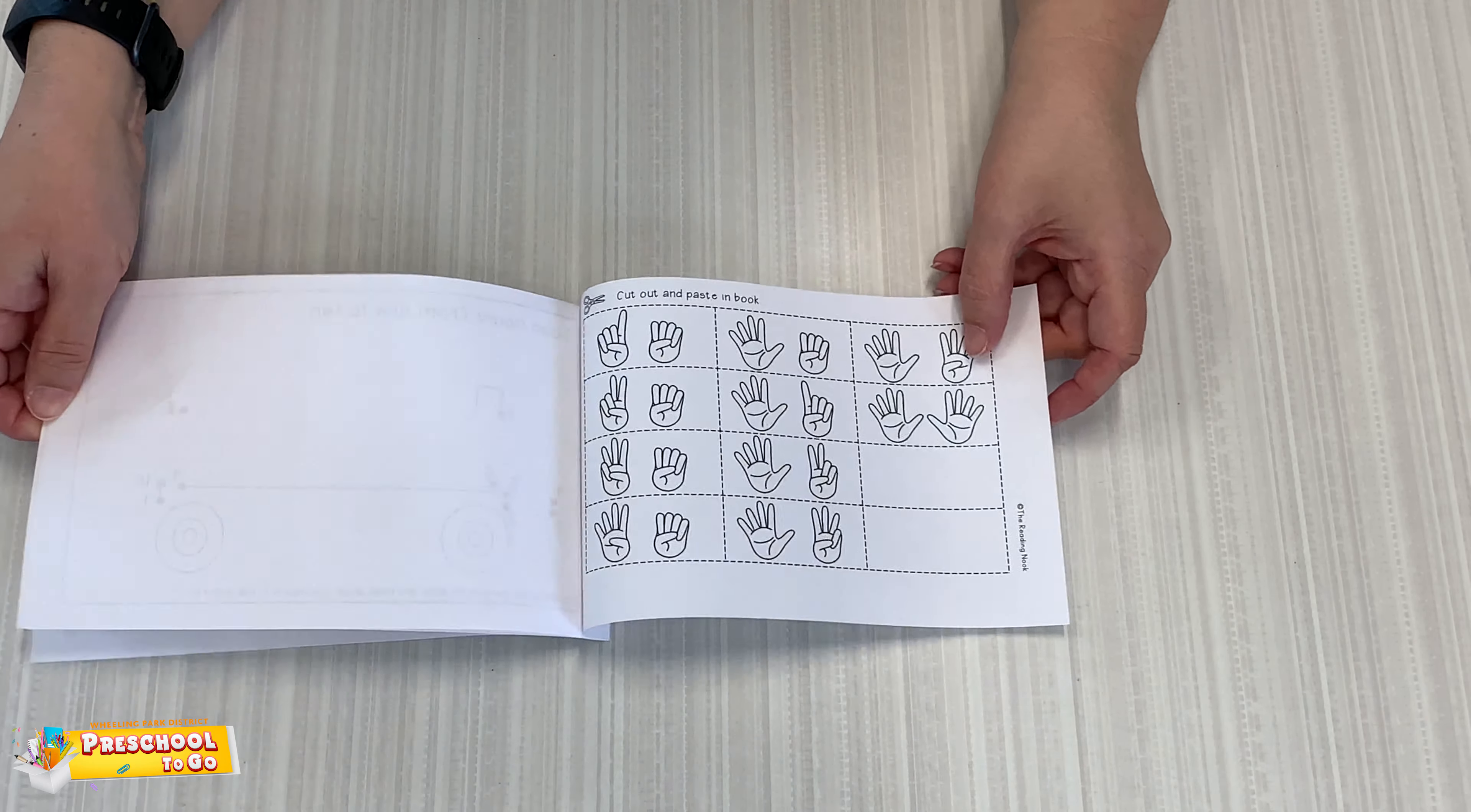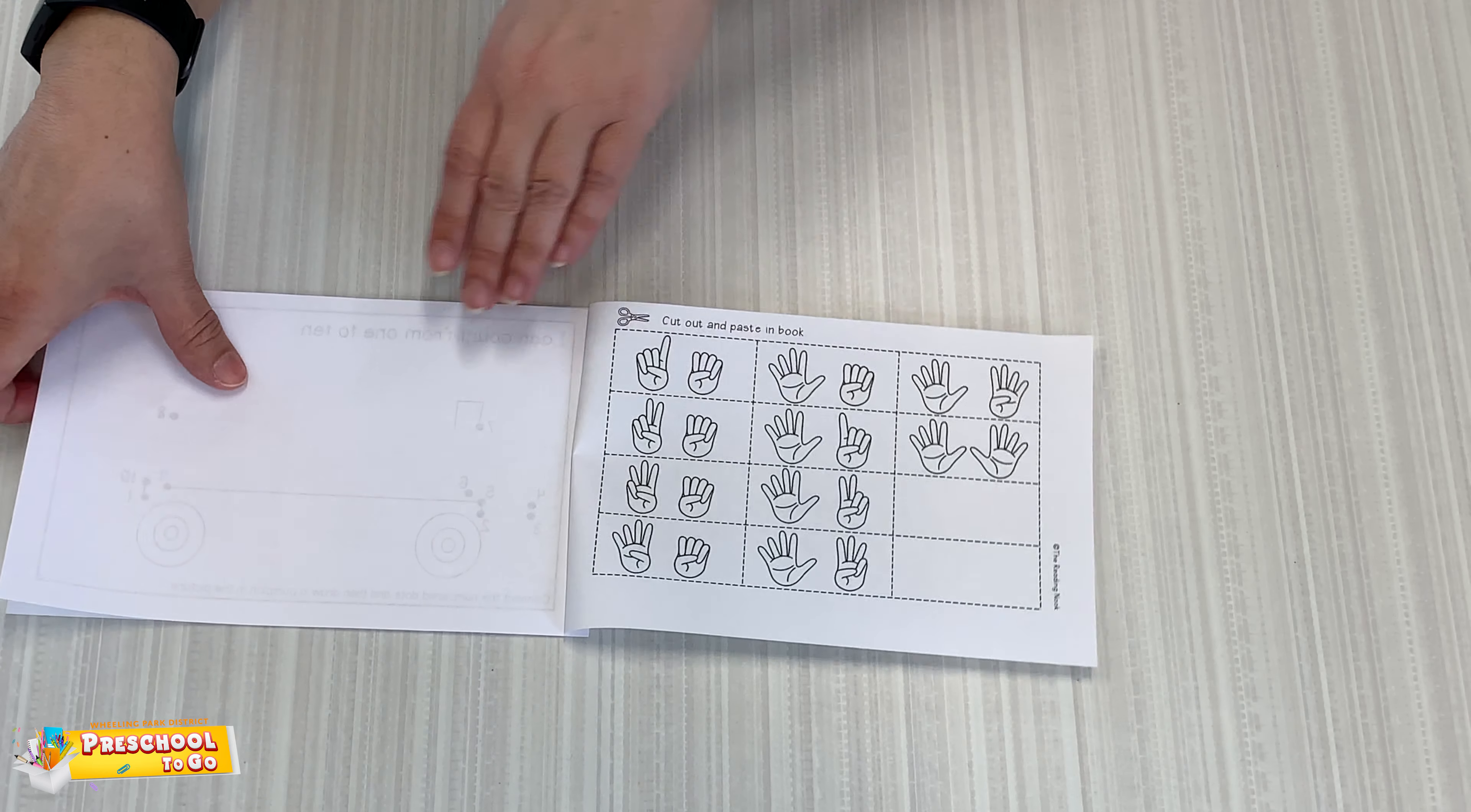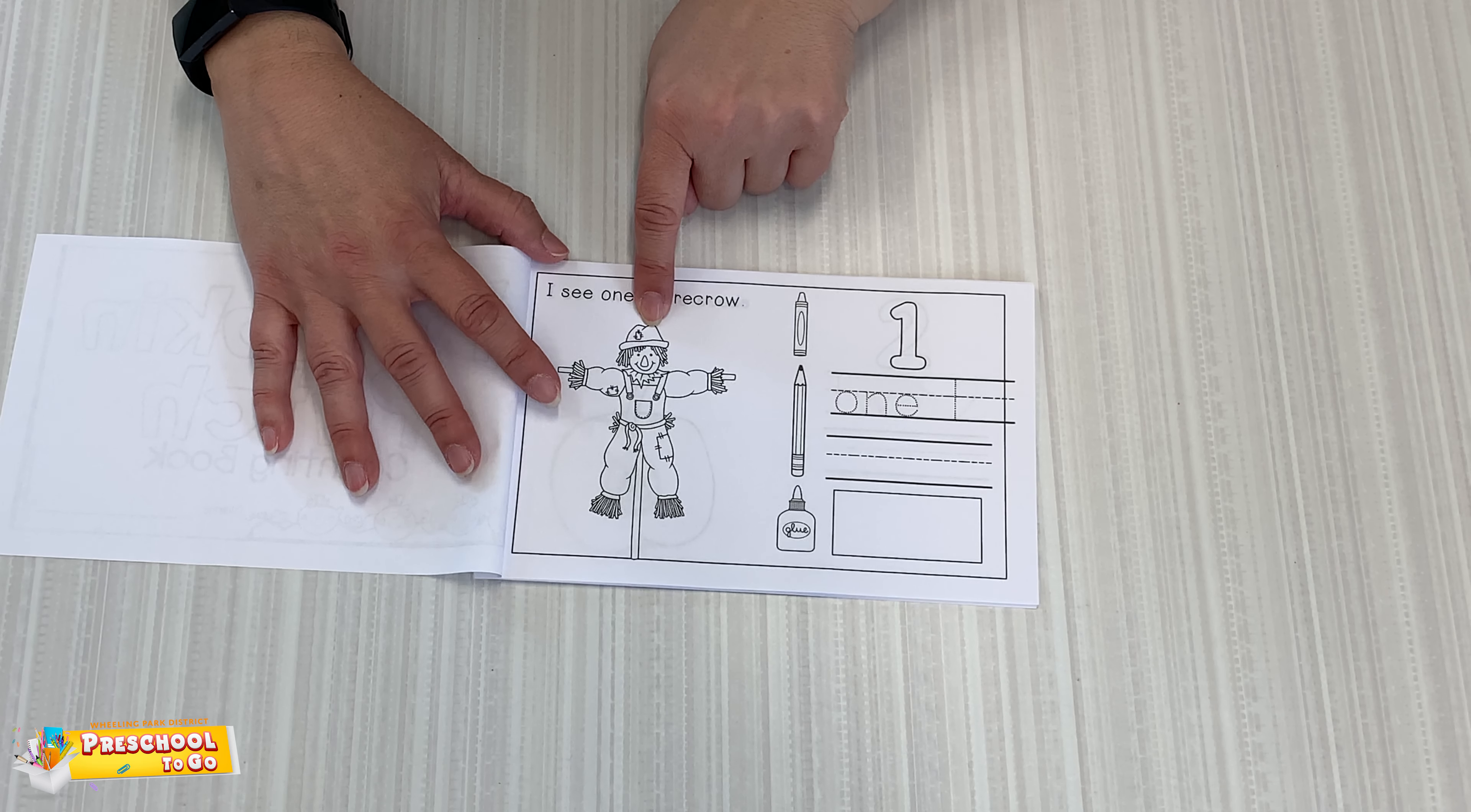For example, here is number one. There's only one finger up. So you're going to cut that one out and you're going to go to the beginning of the book. And it says, I see one scarecrow. Count the number one.